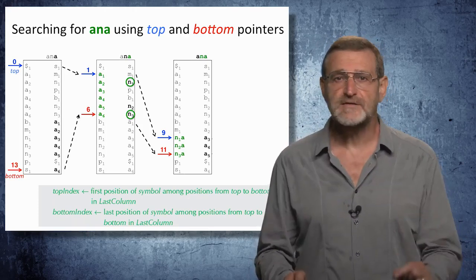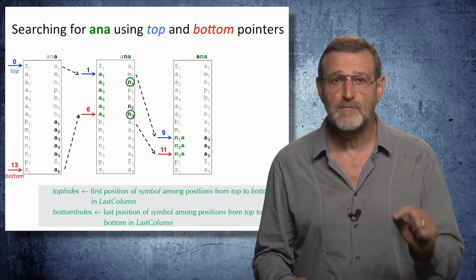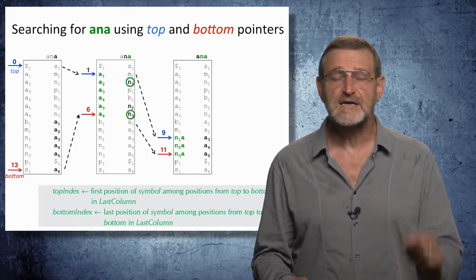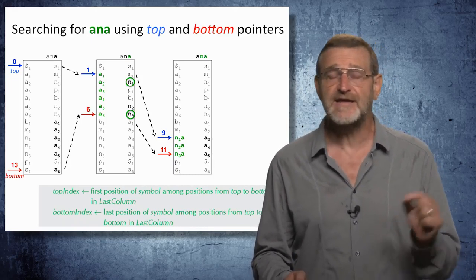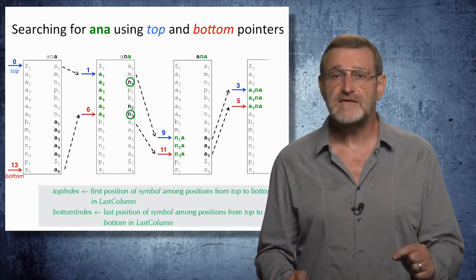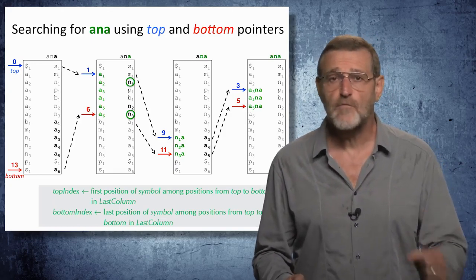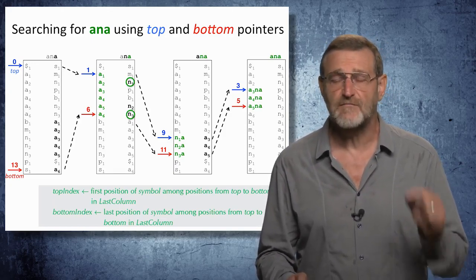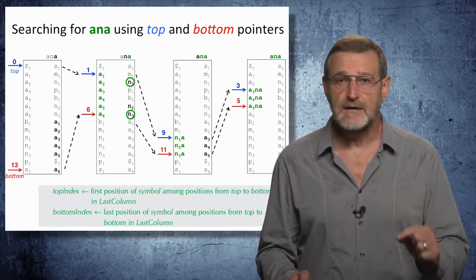As a result, the pointers top and bottom equal to 1 and 6 are changing into 9 and 11. We narrowed the search. And then we continue further, and that's how we find the positions of 'ana' in the text.